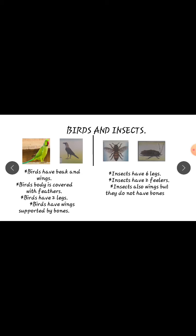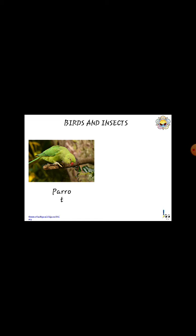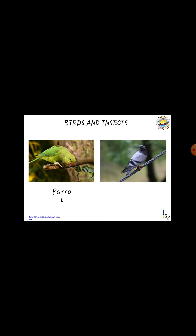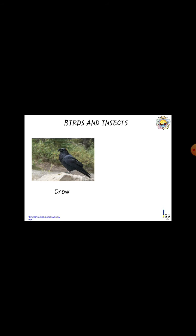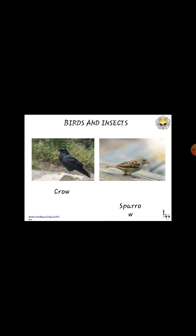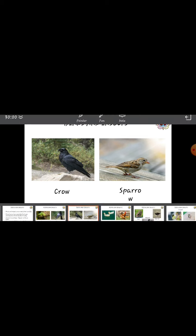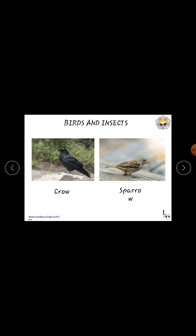Next we learn more examples for birds and insects. Parrot, P-A-R-R-O-T. Pigeon, P-I-G-E-O-N. Crow, C-R-O-W. Sparrow, S-P-A-R-R-O-W. Children, observe the beak, feathers, and wings in all the birds.